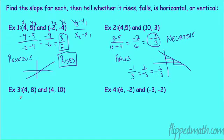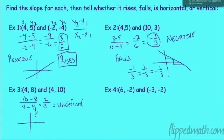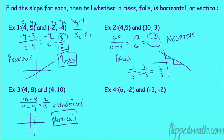Next example: y2 is 10, y1 is 8, x2 is 4, x1 is 4. So 10 minus 8 is 2, and 4 minus 4 is 0. We cannot divide by 0 — that is undefined. On the graph, there's a change of 2 vertically but no horizontal change, so these are vertical lines. Anytime you have an undefined slope, it is a vertical line.